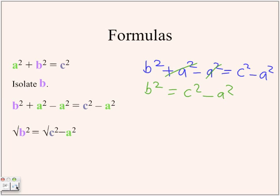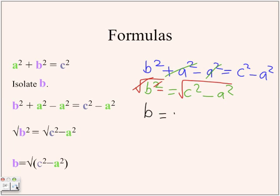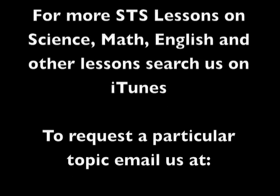Now you have b squared, but you want to isolate b. So you're going to take the square root of both sides of the equation. Because the exponent 2 means squaring, the square root symbol cancels everything out. So you're left with b equals the square root of c squared minus a squared.